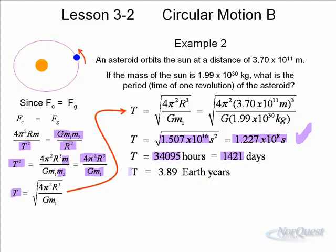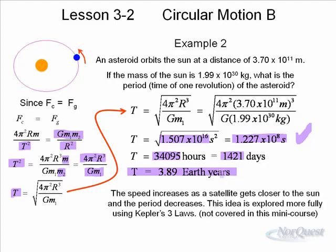So that asteroid takes about 3.89 of our years to go around the sun. It's only one year for the asteroid itself. The speed increases as a satellite gets closer to the sun, and the period decreases. When we talk about Kepler's three laws, which we don't do in this particular course, Kepler goes into this a little bit more.